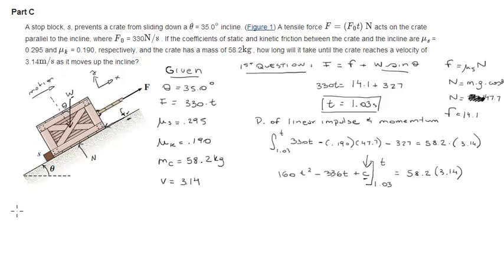Now, there's something we do know though. Right when it starts moving, v equals 0. Right? And t is equal to 1.03. So we can say that v is equal to 160, sorry, this is 165, 165 t squared minus 336 t plus c. If we plug this number into c, if we plug this number into this equation and we solve for c, we get that c is equal to negative 171, which is c right here.